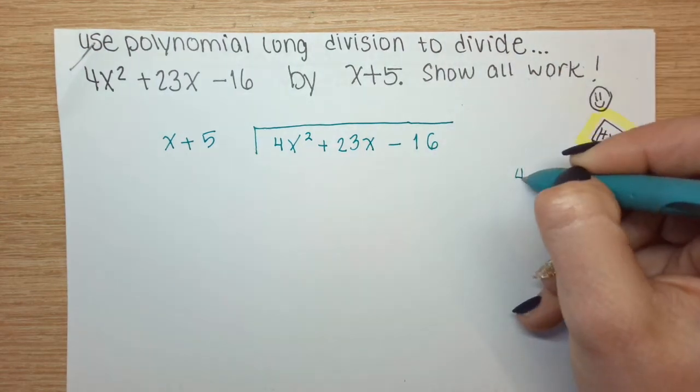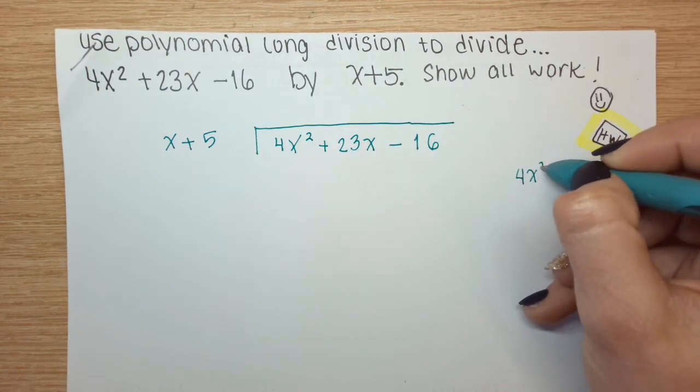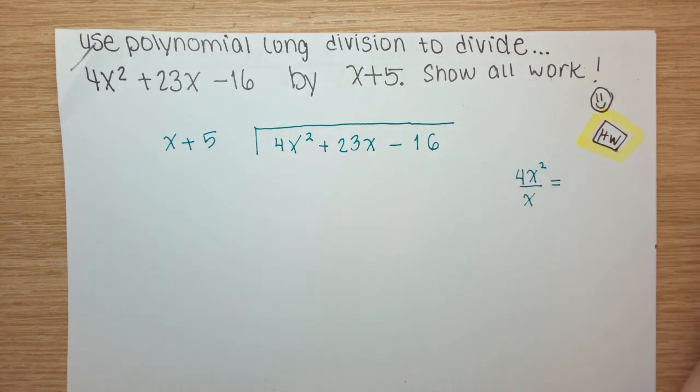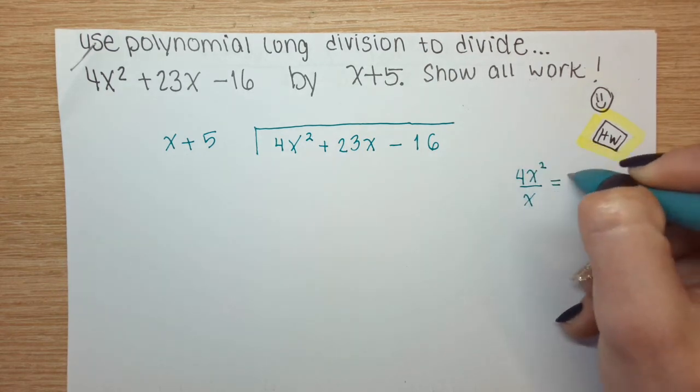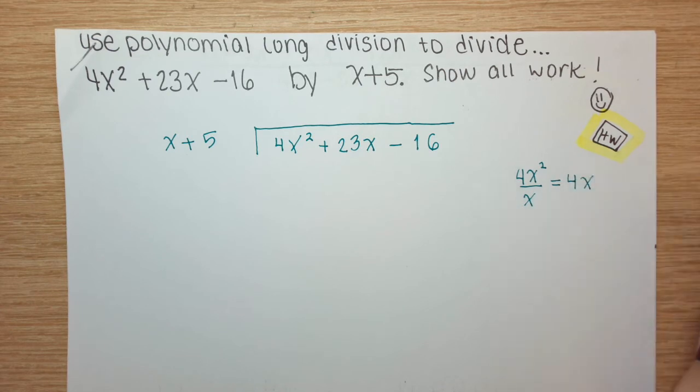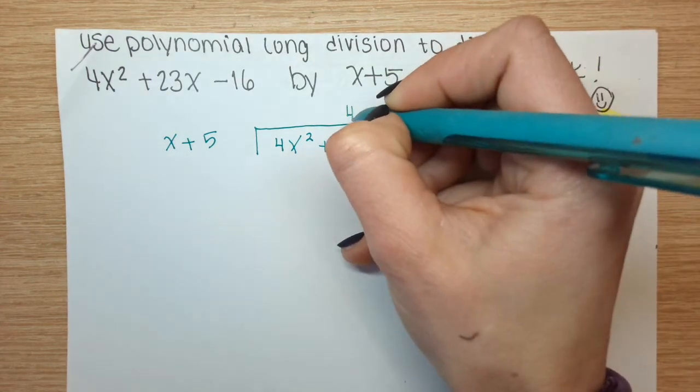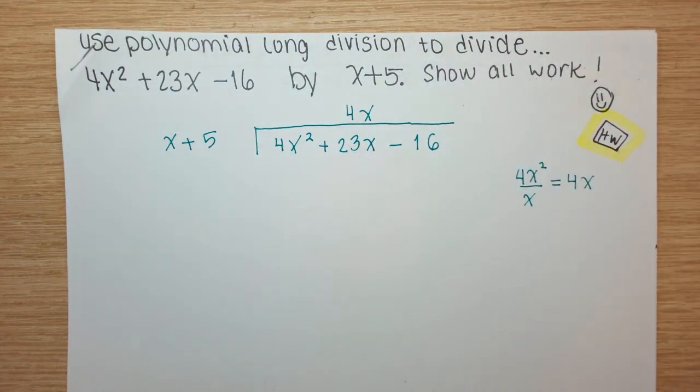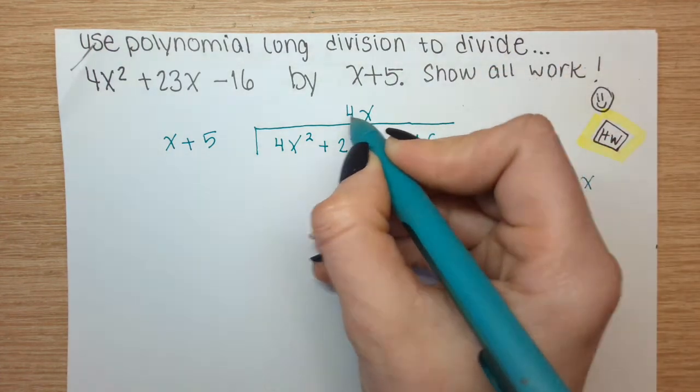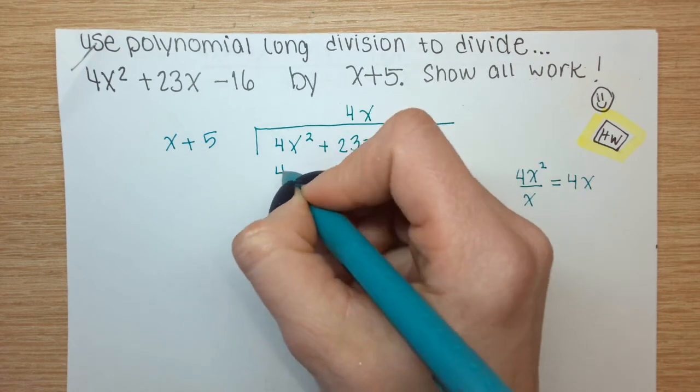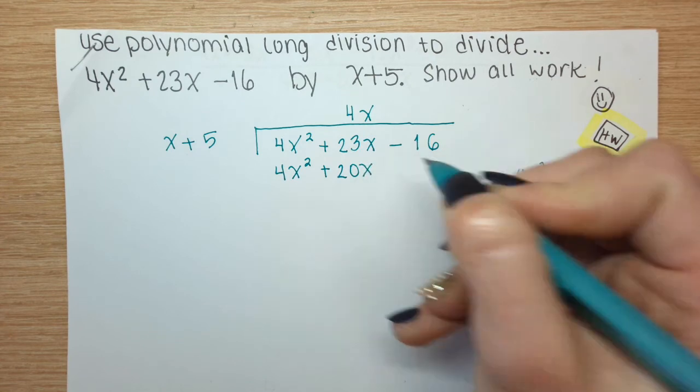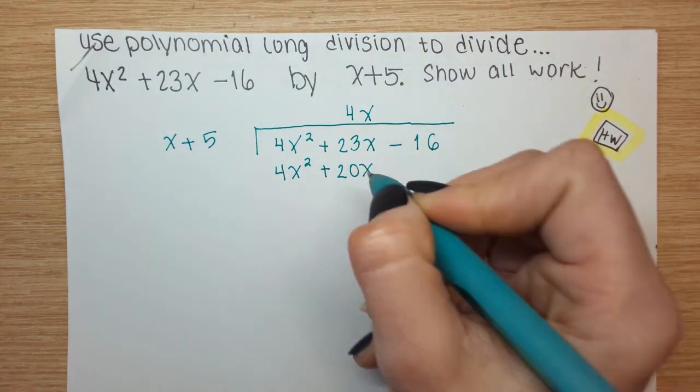We're going to begin the process by dividing the leading term of the dividend by the leading term of the divisor. We get 4x and that's going to go in this column of linear expressions.